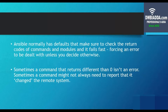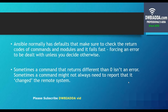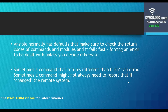First of all, error handling. Ansible normally has defaults that make sure to check the return codes of commands and modules and it fails fast, forcing an error to be dealt with unless you decide otherwise. Ansible provides us with normal default settings through which we can deal with an error occurring in our Ansible scripts. But sometimes a command that returns a code other than 0 isn't an error, so we need to report that it has changed the remote system. The basic objective of error handling is that sometimes the output is not expected as an error, and that is the reason why we need to define the boundaries of an error occurrence.